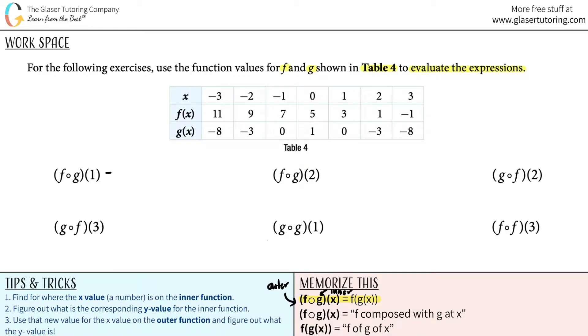So for the first one, it says f composed with g at 1. However, I'm just going to turn it into f of g of 1. And now I can work with this. This is much easier than looking at these.